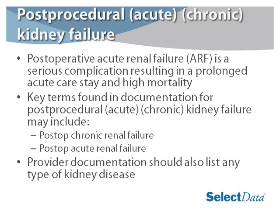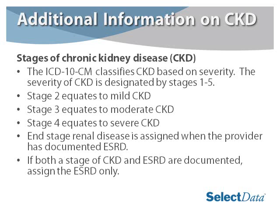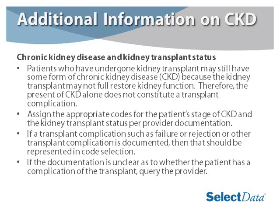Provider documentation should also list any type of kidney disease. For additional information on CKD — the stages of CKD are classified in ICD-10 based on severity, designated by stages 1 through 5, with stage 2 equating to mild CKD, stage 3 equating to moderate CKD, and stage 4 equating to severe CKD. End-stage renal disease is assigned when the provider has documented end-stage renal disease. If both a stage of CKD and end-stage renal disease are documented, you would assign the end-stage renal disease only. For chronic kidney disease and kidney transplant status — patients who have undergone kidney transplants may still have some form of CKD because the transplant may not fully restore kidney function. Therefore, the presence of CKD alone does not constitute a transplant complication. We would assign the appropriate codes for the patient's stage of CKD and kidney transplant status per provider documentation.